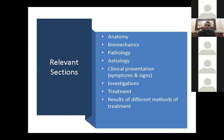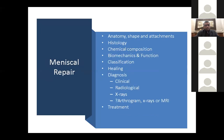Let's look at an example. What are the relevant sections of your review? Anatomy, biomechanics, pathology, etiology, clinical presentation, investigations, treatment, and the results of different methods of treatment. For example, for meniscus repair, you would look into the anatomy, shape and attachments, histology and chemical composition, biomechanics and function of the meniscus, classification of meniscus tears, healing of the meniscus, how to diagnose it, how to treat it, and what the results are.